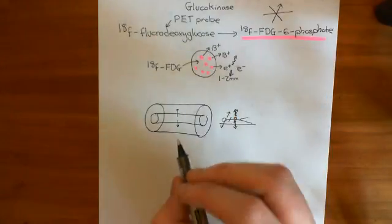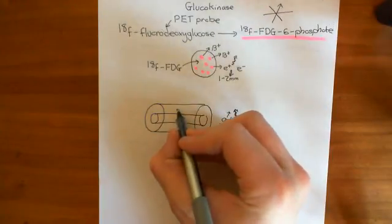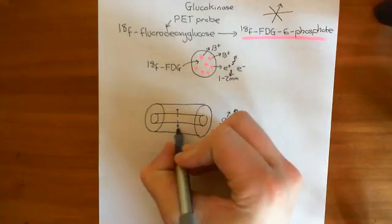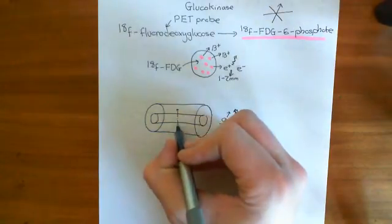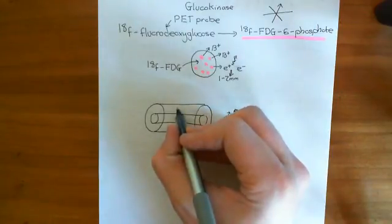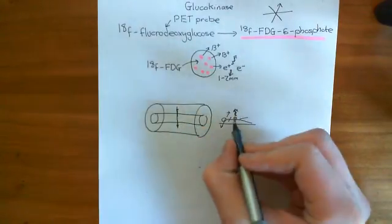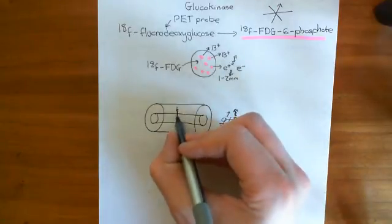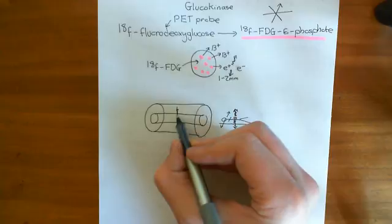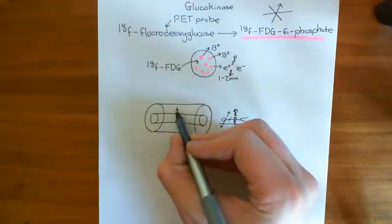What the detector will do is it will detect the photon arriving up here. It will detect the photon arriving here. And then it knows that somewhere in that line, somewhere in that vertical line, a positron and an electron annihilated it. So it roughly knows the position.